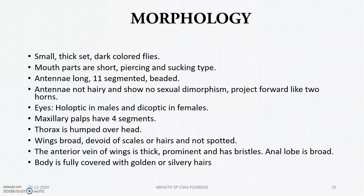Moving to the morphology: they are dark colored, small, thick-set flies. The mouthparts are short, piercing, and sucking type — this is a very important point regarding Simulium. The antenna is not hairy and shows no sexual dimorphism in the antenna. Eyes show a difference: holoptic in males and dichoptic in females. The anal lobe is broad, and the body is fully covered with golden and silvery hairs, which helps distinguish them from other flies.